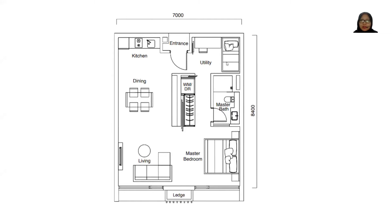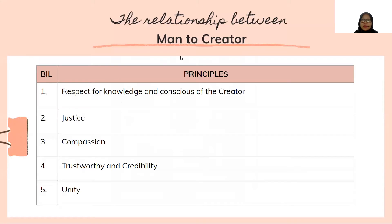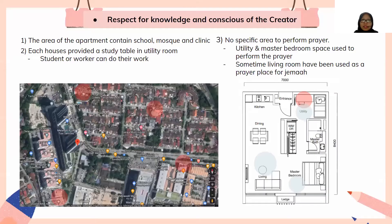Now for the relationship between man and creator, we have five principles: respect for knowledge and conscience of the creator, justice, compassion, trust and credibility, and unity. Let's begin with the principle of respect for knowledge and conscience of the creator.